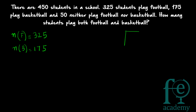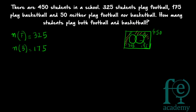For these kinds of questions, a diagrammatic representation by means of a Venn diagram is very useful. This square represents the total number of students — 450. Inside it, one circle represents students playing football and another circle represents students playing basketball. The 50 students who neither play basketball nor football fall outside both circles.